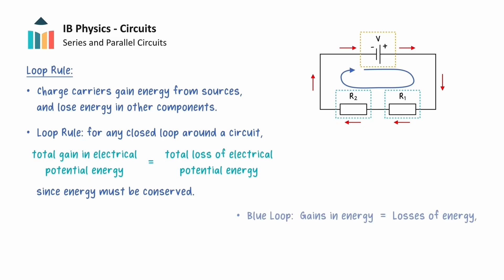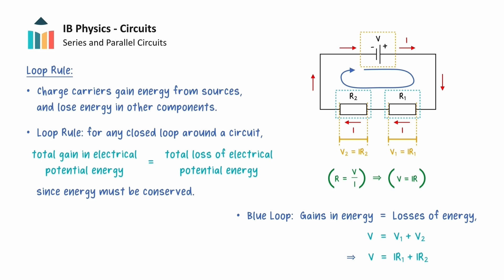Let's apply the loop rule to the blue loop in this series circuit. The only source of potential difference in this loop is the cell, which has a voltage V, so the gain in electrical potential energy per unit charge is equal to V. The total losses of potential energy per unit charge in this loop will be caused by both of the resistors. Specifically, the drop in voltage in each resistor will be equal to the potential difference across each resistor, which we will denote as V1 and V2. This is a series circuit, so we know that the current in each resistor is the same, which we will denote as I. By using the definition of resistance, the potential difference across each resistor must be equal to the current multiplied by its resistance. After making these substitutions for V1 and V2 into this equation, we can see how the loop rule can be used to relate the voltage of the cell to the current in the circuit and the resistances of each resistor.